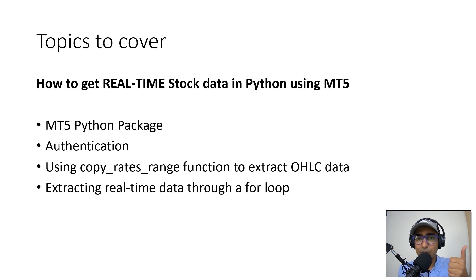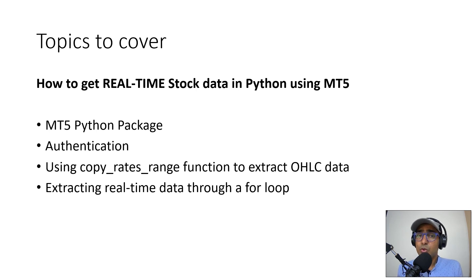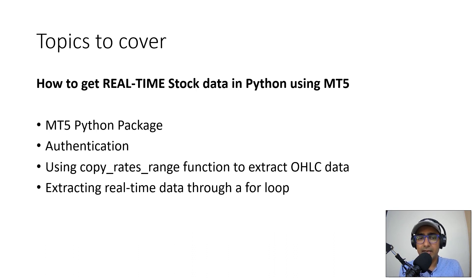So what are the topics we are going to cover in this video? First, we will be exploring the MT5 Python package. Second, we will learn how to authenticate it. Third, we will be using the copy rates range function to extract OHLC data. And finally, we will be extracting real-time data through a for loop on the copy rates range function only. I'm not using WebSocket here — I'm just making a loop and extracting historical data, meaning it gives us all the data till the last candle. If we have a one-minute candle and a for loop that triggers the API every minute, we can extract real-time prices.